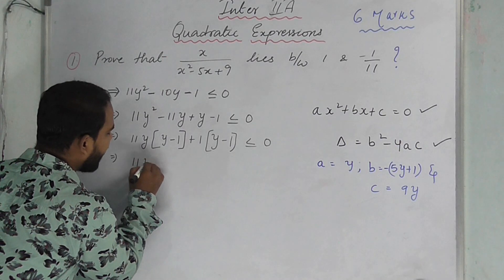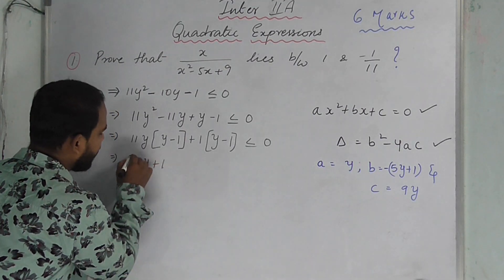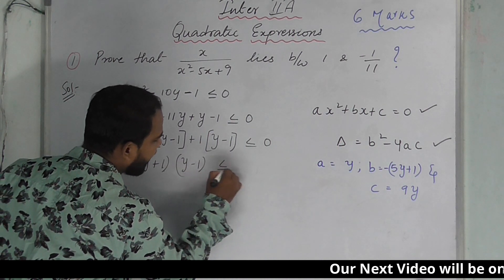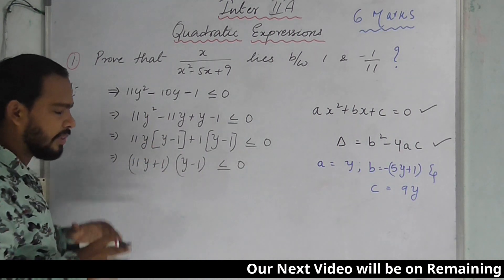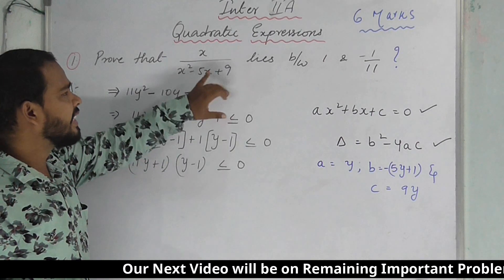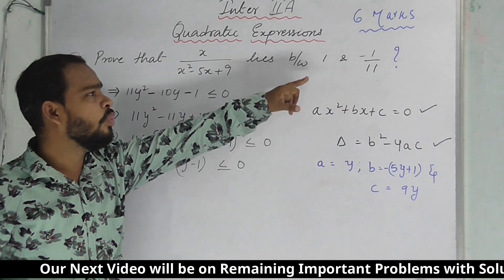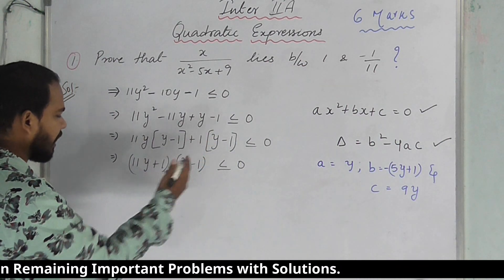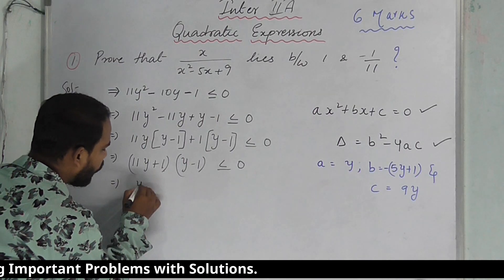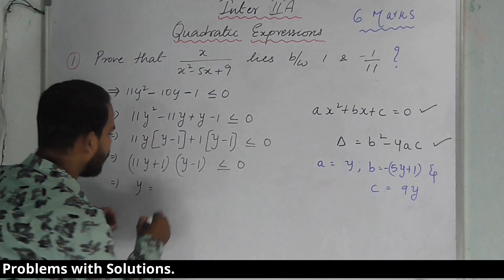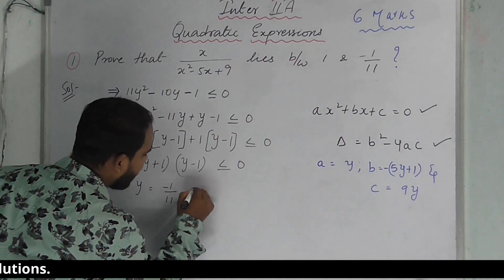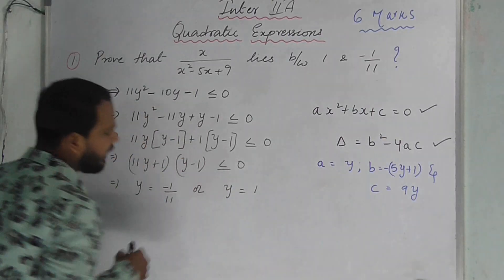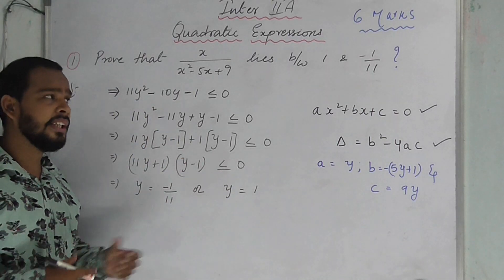Factoring, we get: (11y plus 1)(y minus 1) equals 0, giving roots y equals minus 1 by 11 and y equals 1. Since the inequality is satisfied between the roots, y lies between minus 1 by 11 and 1.